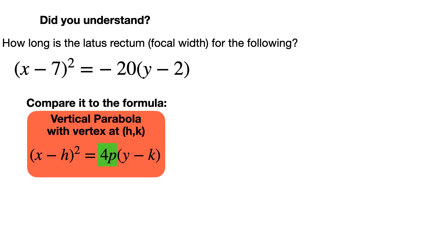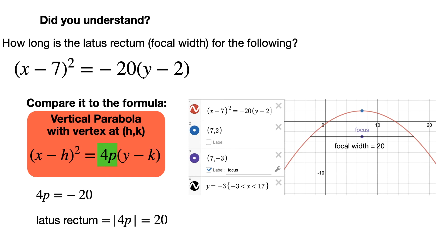The number next to the thing that isn't squared, next to the variable expression that isn't squared, is the latus rectum once you take the absolute value of it. So 4p is negative 20 in this case, the absolute value is just going to be 20, and therefore the focal width in this case, as I showed you on Desmos, is going to be 20 exactly.